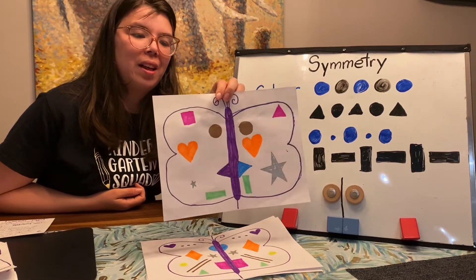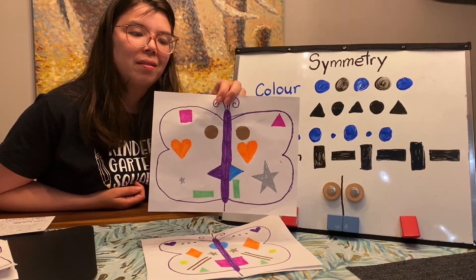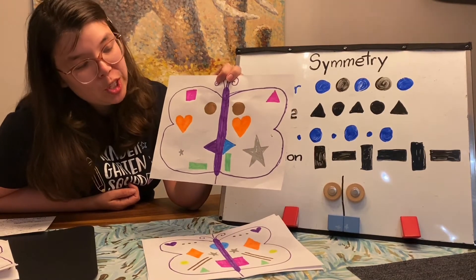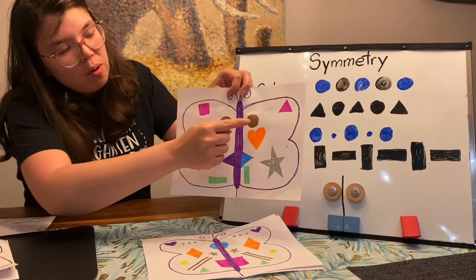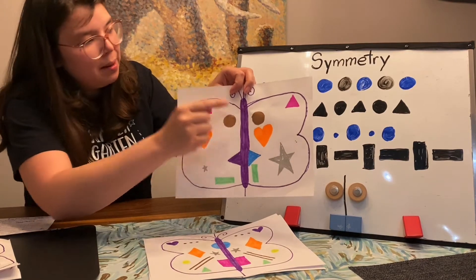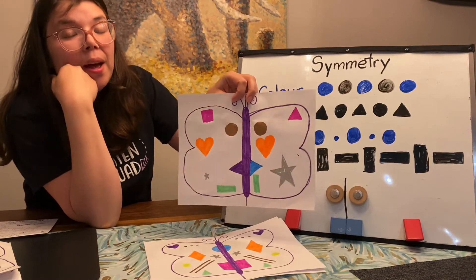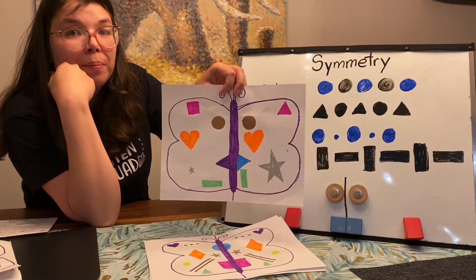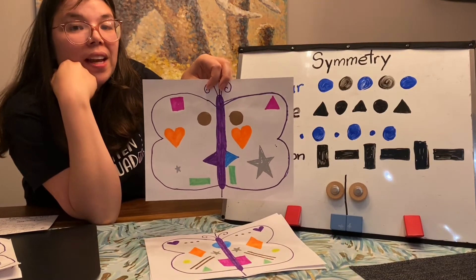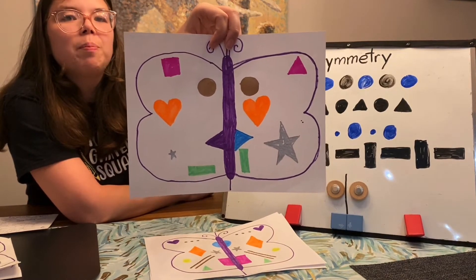I've made one more butterfly. Do you think this one is symmetrical? One of the attributes in this butterfly is this gold circle because it's close to the middle — it's the same shape, same size, same color, and same position. But there are actually five problems with this butterfly that make it not symmetrical. If you want, you can pause the video here and see if you can find the five mistakes.